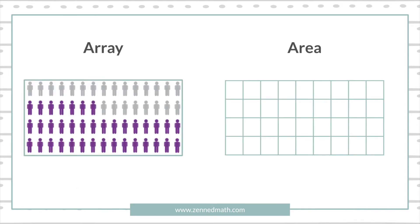I want to dig a little deeper into the definitions. Starting off with arrays — they're introduced pretty early, around second grade, starting with talking about rows and columns. Simply meaning that a row times a column equals a cell. Area does involve arrays of squares that have been pushed together so that there are no gaps or overlaps.